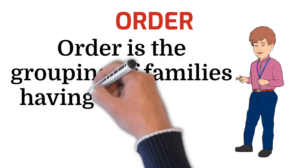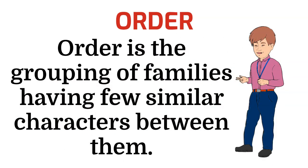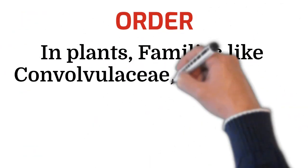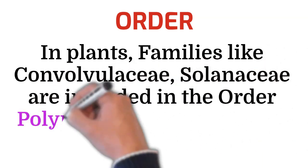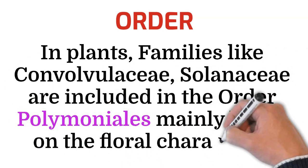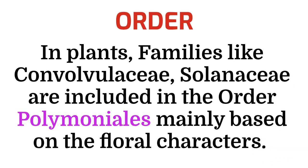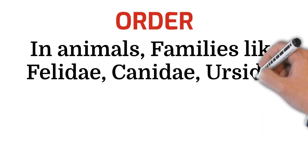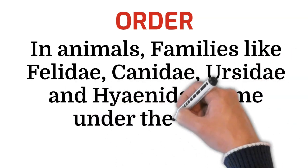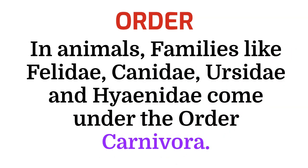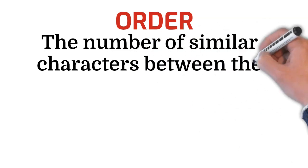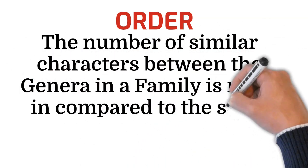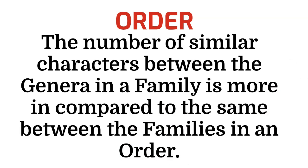Order is the grouping of families having few similar characters between them. For example, in case of plants, families like Convolvulaceae and Solanaceae are included in the order Polemoniales, mainly based on floral characters. Likewise, in animals, families like Felidae, Canidae, Ursidae, and Hyaenidae come under the order Carnivora.